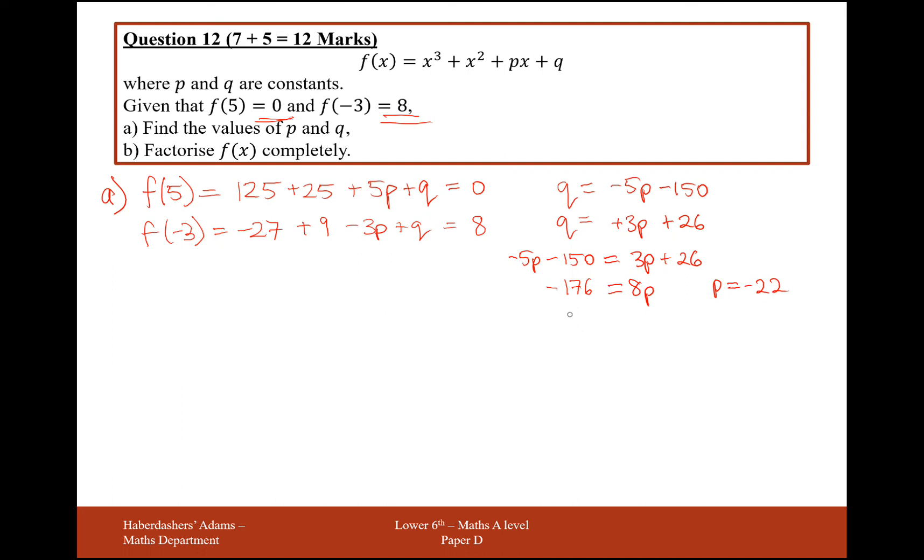And then plugging that back into one of these equations at the top here, q, I'll do this one here. So it'll be 3 times q, it's minus 66. Add 26, you'll get minus 40. Okay, so those are your two values for p and q.